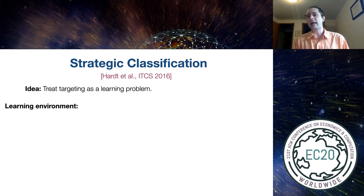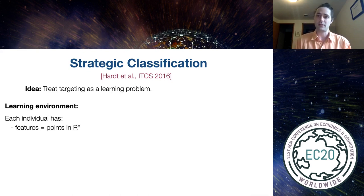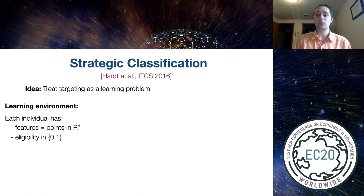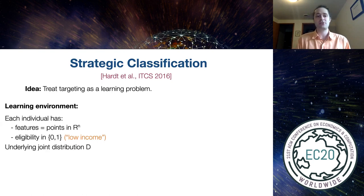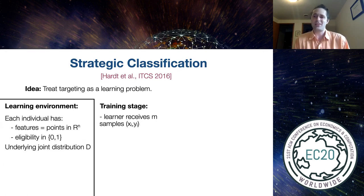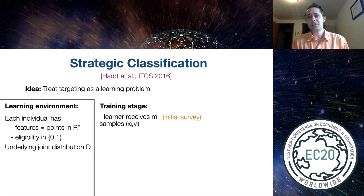The learning environment will look a lot like a pretty standard learning environment in computational models. Each individual has some vector of features — individuals are points in R^N — and they have a label associated with them, which will be their eligibility: zero if they are not low income, and one if they are eligible and low income. There will be an underlying distribution D joint over the features and people's eligibility. In the training stage, you receive M labeled samples — labeled by someone's features and whether or not they are low income. In the proxy means testing setting, you should imagine this as being the survey data used to train your proxy means test, which is honest data with no incentive to misreport.